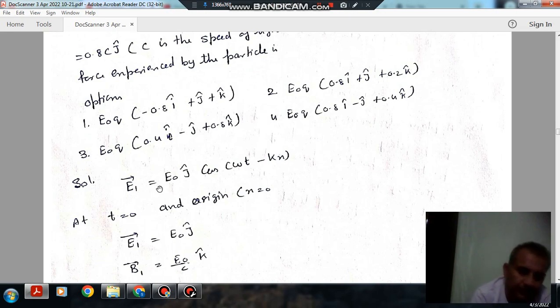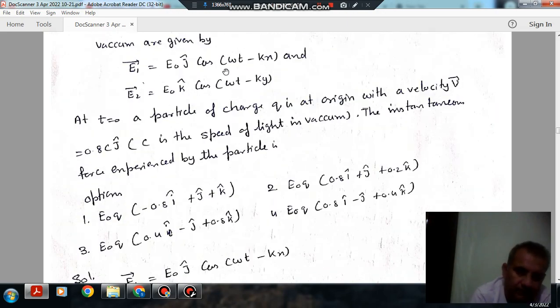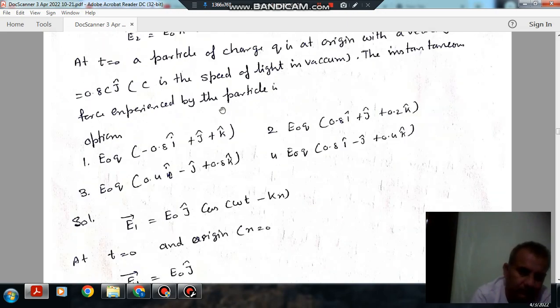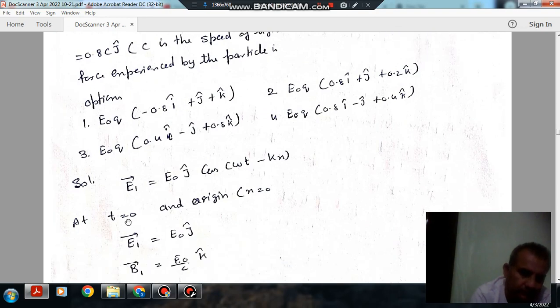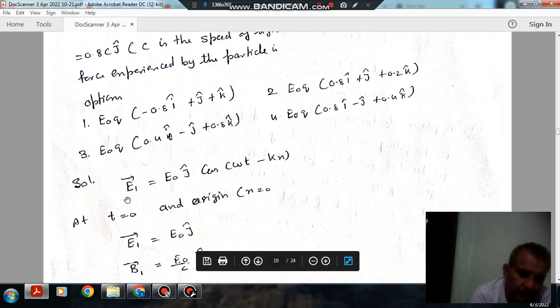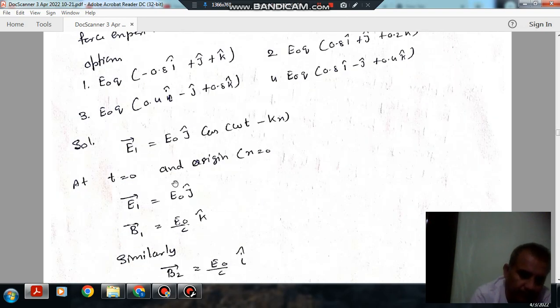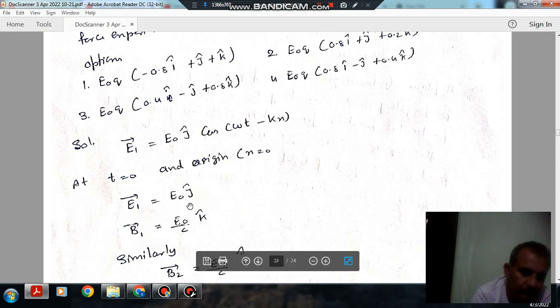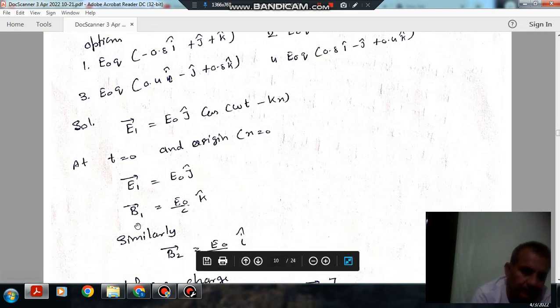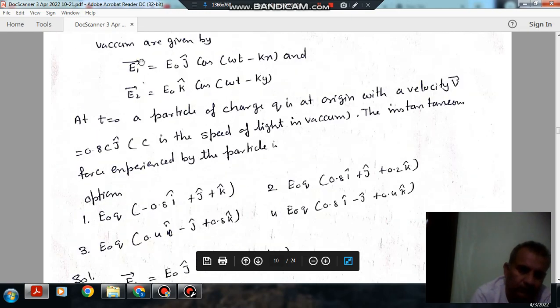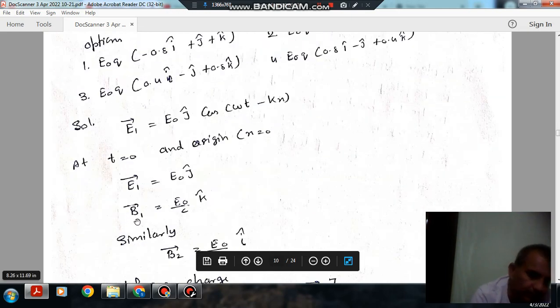So E1 is E0 in j direction and E2 is E0 in k direction. When t is 0 and x is 0, E1 is E0 j. Similarly, E2 is E0 k. Now we know that B0 equals E0 by c.